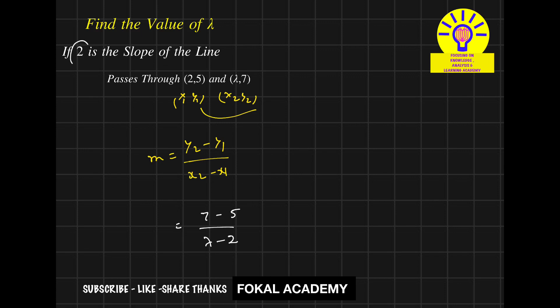Now bring this term to the left-hand side. It becomes 2 times (lambda minus 2) equals 7 minus 5, which is 2. So expanding that, it becomes 2 lambda minus 4 equals 2.